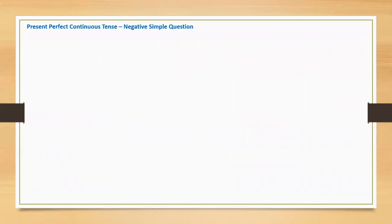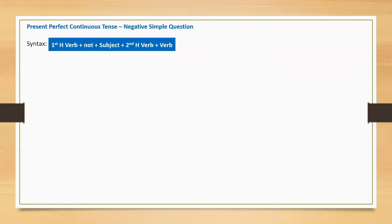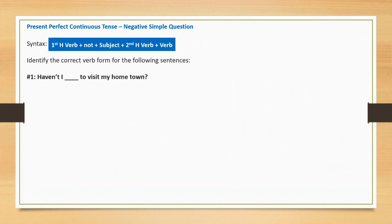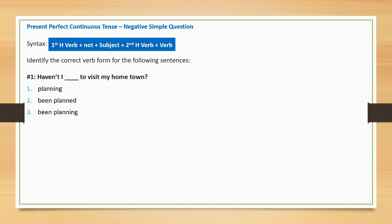Present perfect continuous negative simple question. Syntax: first helping verb plus 'not' plus subject plus second helping verb plus main verb. Sentence one: 'Haven't I blank to visit my hometown?' Option one: planning. Option two: been planned. Option three: been planning. Correct option: been planning.